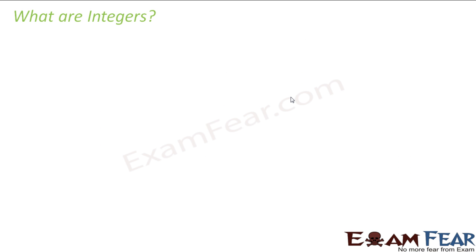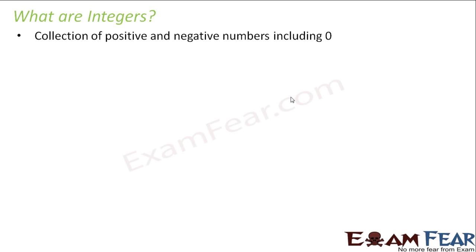So then came up these integers. Integers are a set of numbers which include the positive numbers plus negative numbers plus zero. Basically it includes all the whole numbers along with the negative numbers. All of them together are called integers.